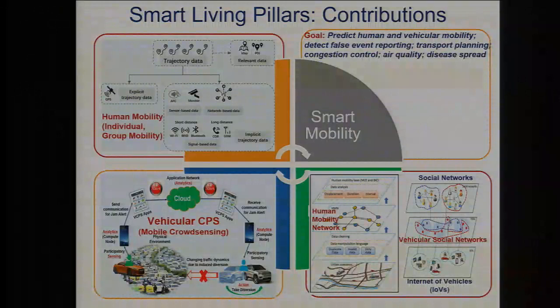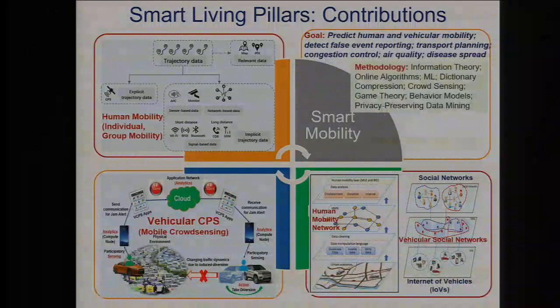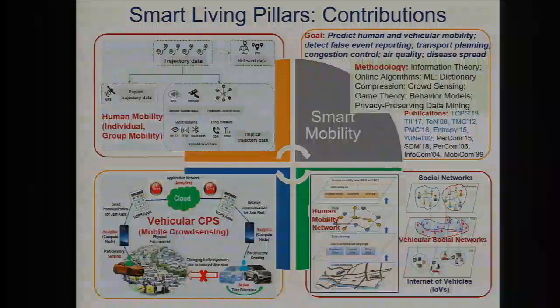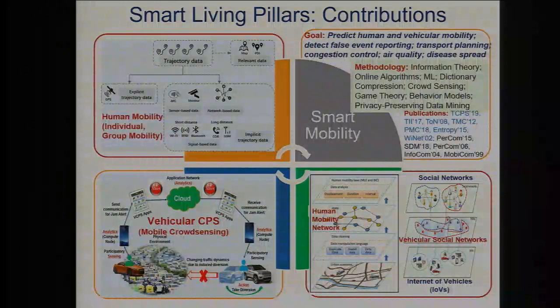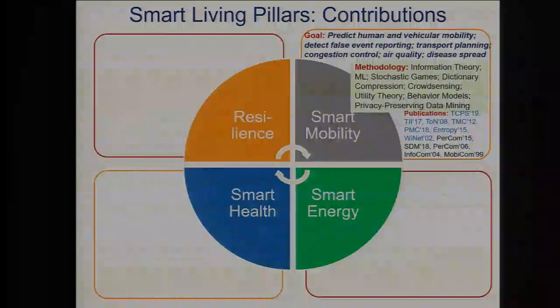Human mobility of course is responsible for disease spread through contagious diseases. Lots of applications are there — we have been developing solutions for those problems using different types of theory, publishing quite regularly in those areas. The blue ones are journal papers and the black ones are conference papers.